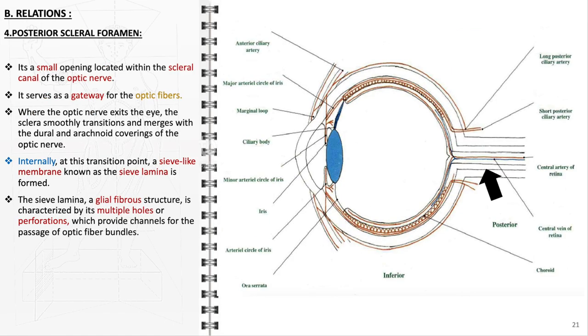The posterior scleral foramen and the various scleral apertures are key features of the sclera, each contributing uniquely to the eye's anatomical structure and its overall function. The posterior scleral foramen, a small yet critical opening, is situated within the scleral canal of the optic nerve. This foramen primarily serves as a conduit for optic fibers, playing a pivotal role in the transmission of visual information.